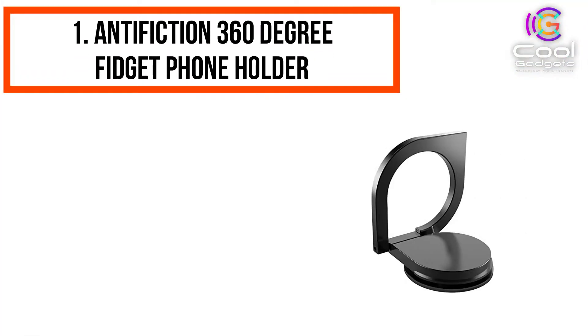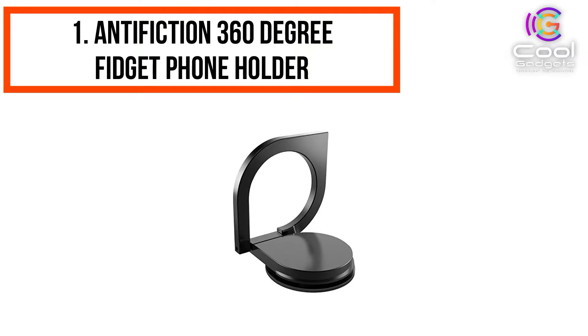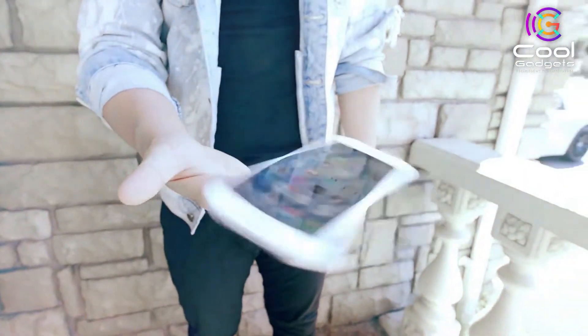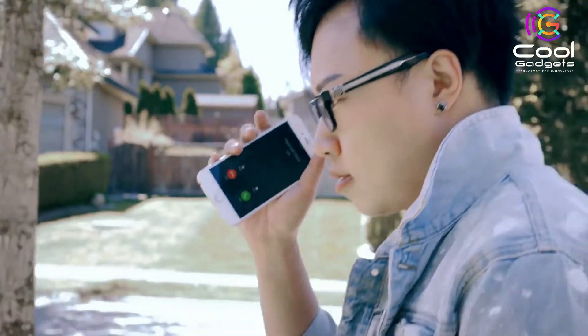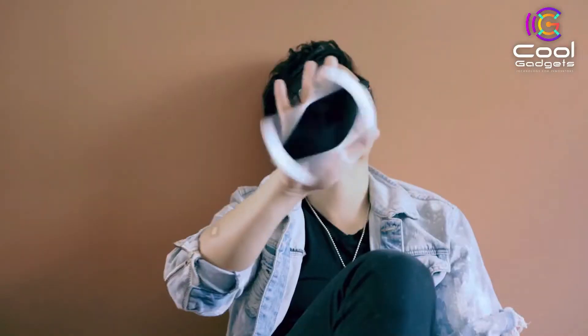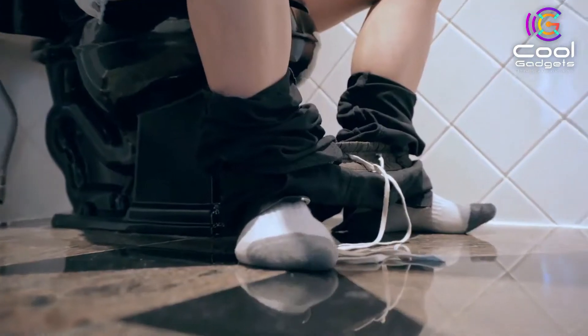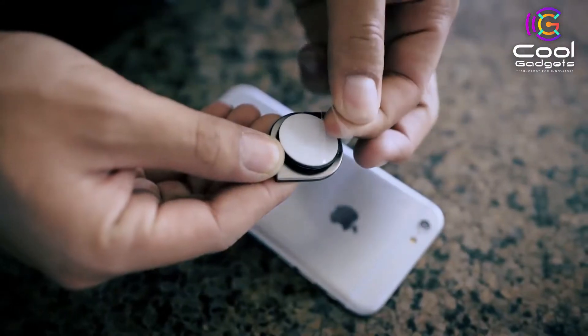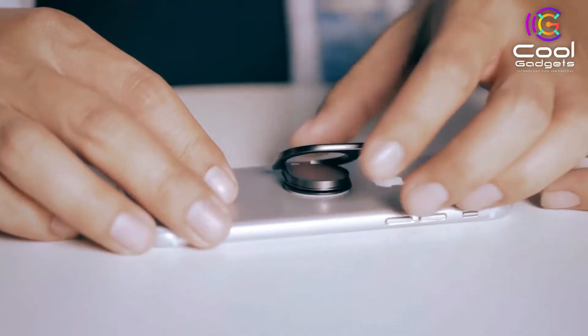Number 1: Antifixion 360-degree Fidget Phone Holder. Latest and improved 2.0 version Antifixion introduces a top-of-the-line multipurpose phone ring plus stand plus fidget spinner. It is universally compatible and fits any and all phone models. Use it as a phone ring to have a grip on your phone, use it as a mobile phone stand to watch videos or other content, or use it as a fidget spinner at the back of your phone.